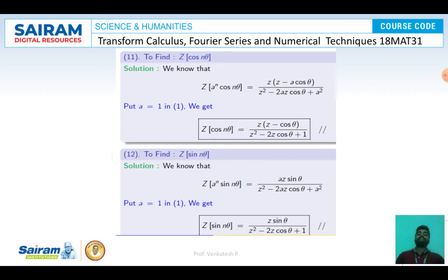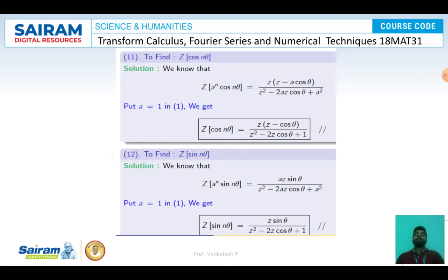For Z{cos Nθ} and Z{sin Nθ}, substitute A = 1 in the previous formulas. Z{cos Nθ} = Z(Z - cos θ)/(Z² - 2Z cos θ + 1) and Z{sin Nθ} = Z sin θ/(Z² - 2Z cos θ + 1).